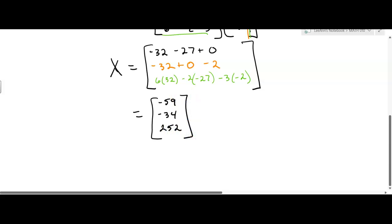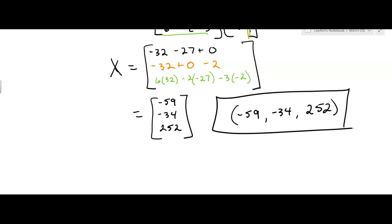And so your ordered triple then is going to be negative 59 comma negative 34 comma 252. And what will be fun is when you get that problem right, you'll just be really happy. Okay, so have fun with matrices. We don't do matrices in chapter 8 or 9. This is just an introduction to matrices. And if you wanted to do more work with matrices, I love linear algebra and working with matrices. But you take calculus and then you take linear algebra. Okay, so have a fun time with them.